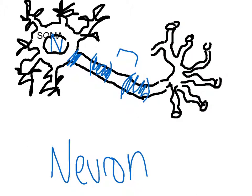And inside these terminal branches, there are these vesicles, which are little balloon-shaped things that hold all the neurotransmitters.